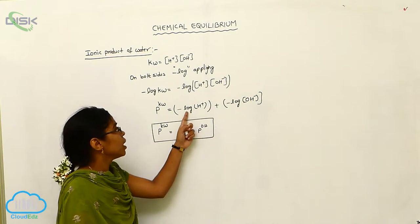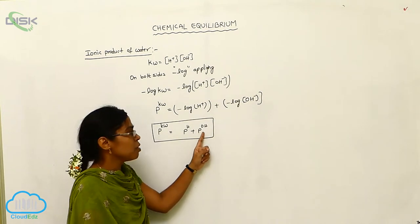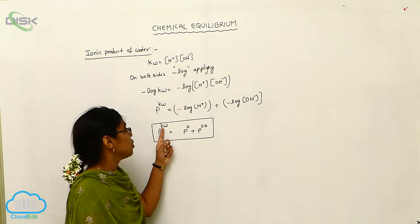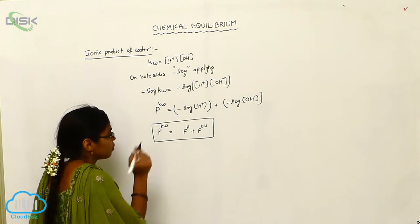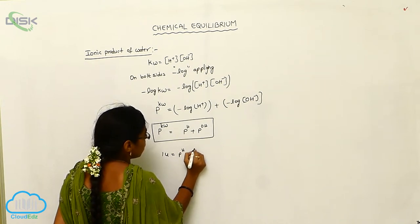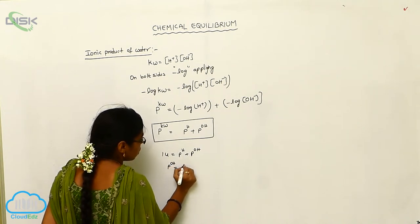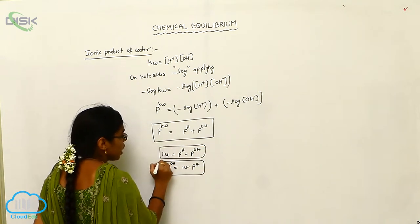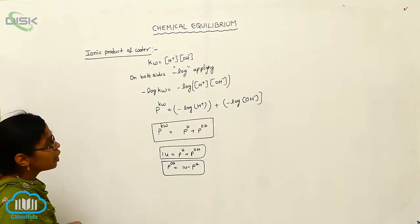Minus log[H⁺] is called pH, and minus log[OH⁻] is called pOH. Since pKW = 14, we get: pH + pOH = 14, or POH = 14 − pH. These relationships are important for calculating pH values.